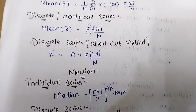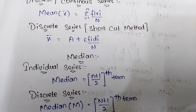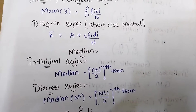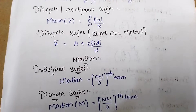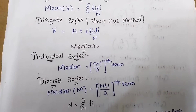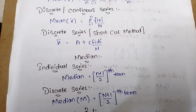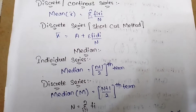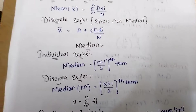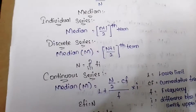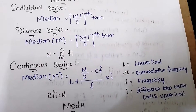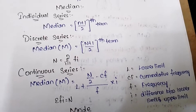Median: for individual series, the median is the (n+1)/2 th term. For discrete series, median is the (n+1)/2 th term where n equals total frequency. For continuous series, the median formula is L + (n/2 − cf) / f × i, where L is the lower limit, cf is cumulative frequency, f is frequency, and i is the class width.